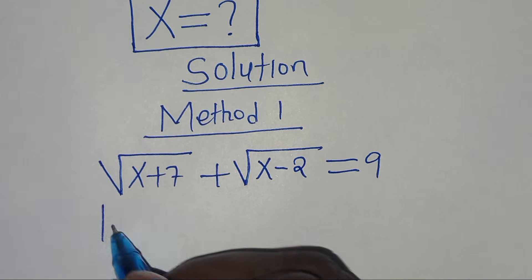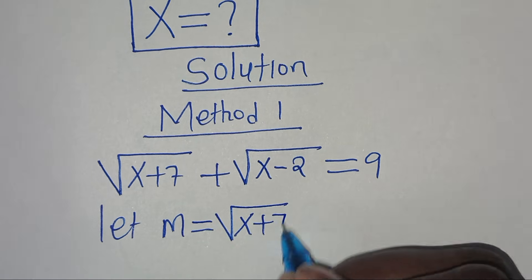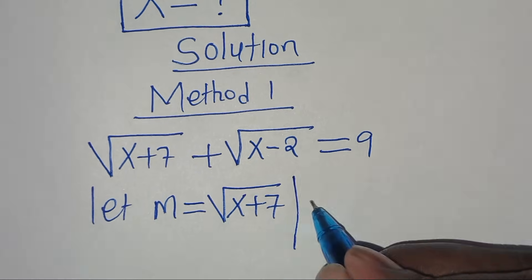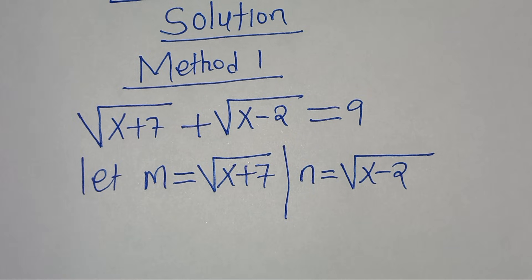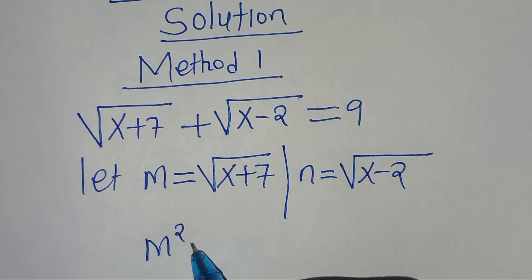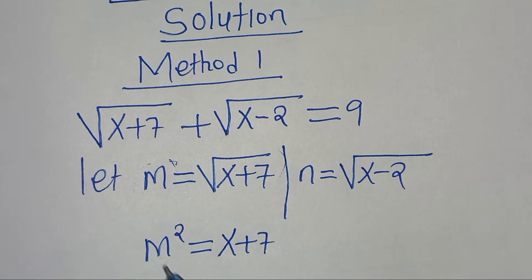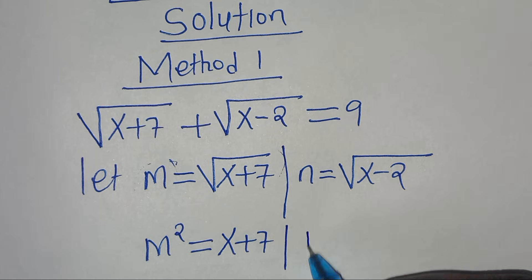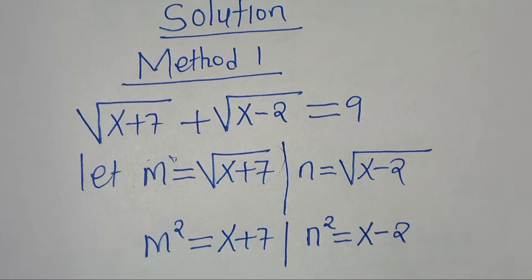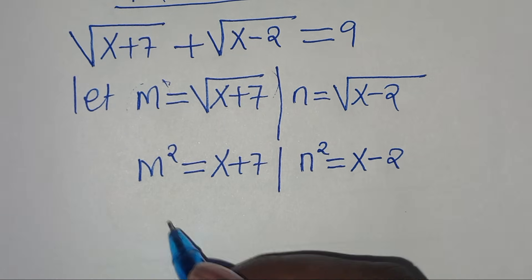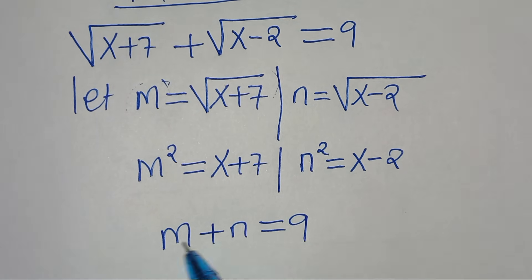In this case, we can let m be equal to the square root of x plus 7, and we can let n be equal to the square root of x minus 2. This implies that m squared is equal to x plus 7, and n squared is equal to x minus 2. We also have that m plus n equals 9.